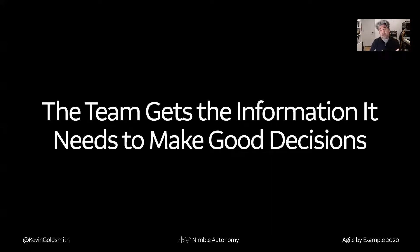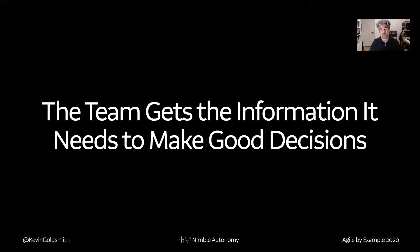The team needs transparency and visibility into information — making sure the team gets all the information it needs to make good decisions. It can't be decided from outside the team what information is relevant. Because if the team is autonomous, it is essentially a silo — a unit — and it isn't going to be visible from outside the team what information is critical and what isn't.